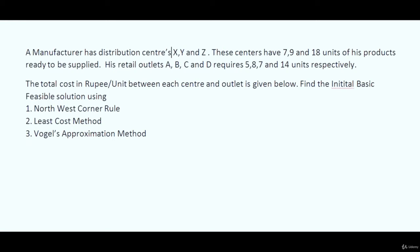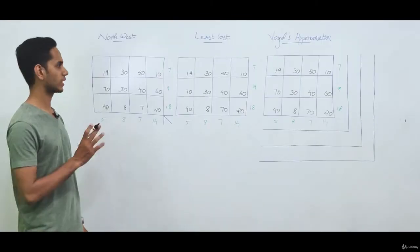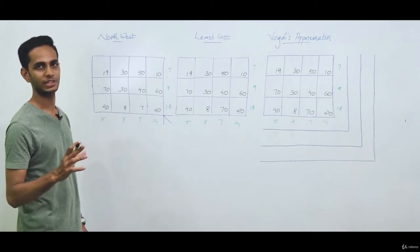Now let's move on to the case studies of transportation. We will be dealing with three methods: the Northwest rule, least cost method, and Vogel's approximation method. In this video, a manufacturer has three distribution centers namely X, Y, and Z, with 7, 9, and 18 units respectively. Retail outlets A, B, C, and D require 5, 8, 7, and 14 units respectively. The transportation cost in rupees per unit between each center and outlet is given. Find the initial basic feasible solution with the three methods.